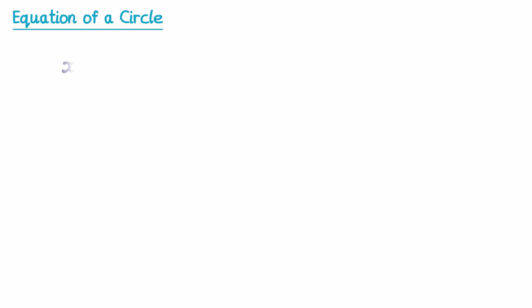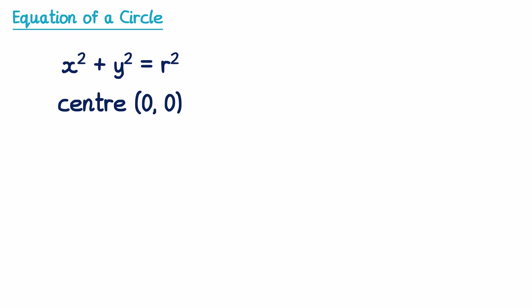The equation x² + y² = r² is the equation of a circle. If we were to draw a graph of this equation, it would be a circle with a centre at the origin (0, 0) and its radius would be equal to r.